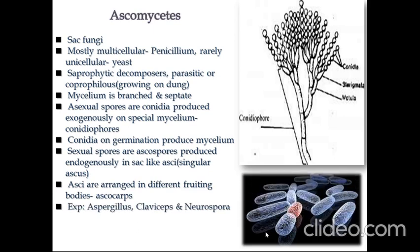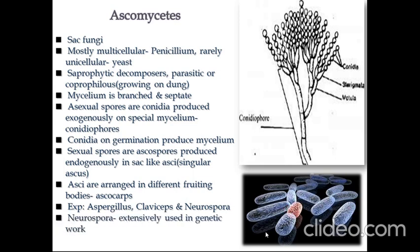Some examples of Ascomycetes are Aspergillus, Claviceps, and Neurospora. Neurospora is extensively used in genetic work and mutant studies, so it is very important for geneticists. Morels and truffles are also edible Ascomycetes.